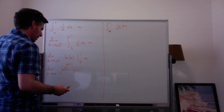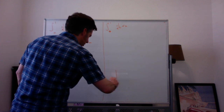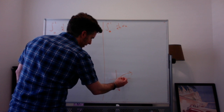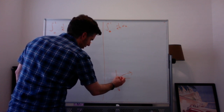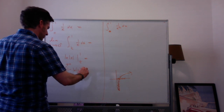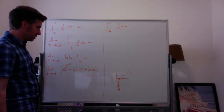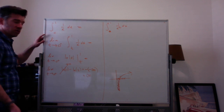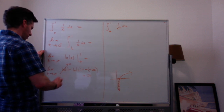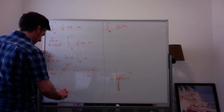So this is going to be: as t approaches 0 from the right, what happens to the natural log function? The natural log function goes down, down, down to negative infinity as we approach 0 from the right. So this is actually going to be negative negative infinity, which is infinity. So the integral from 0 to 1 of 1 over x diverges.